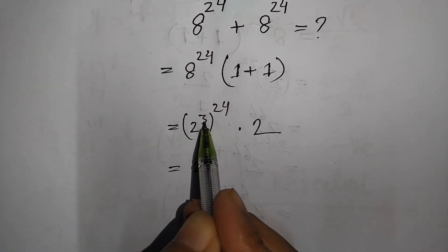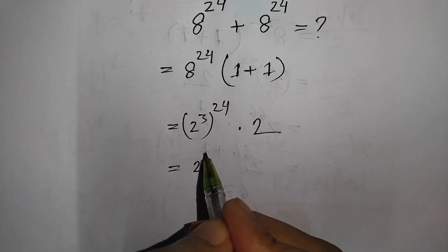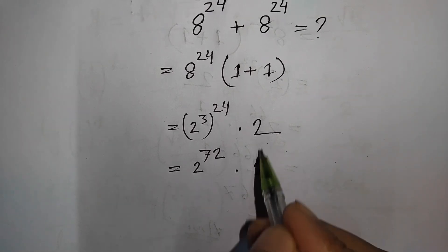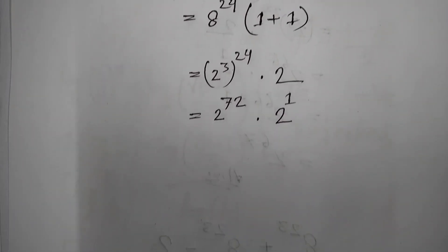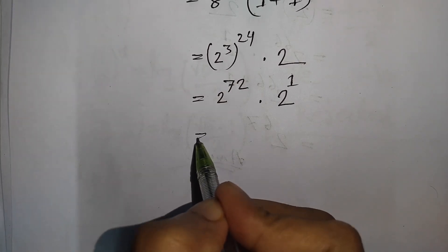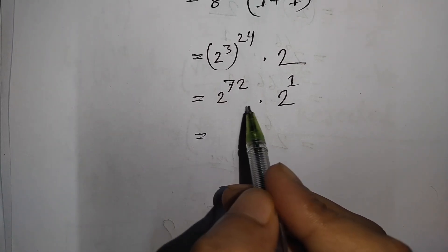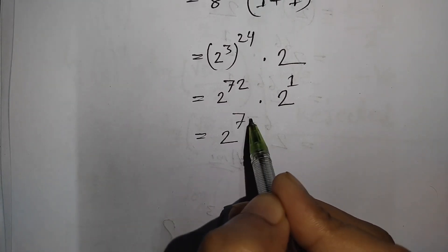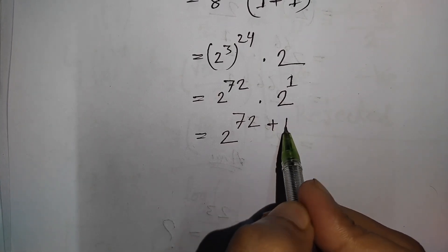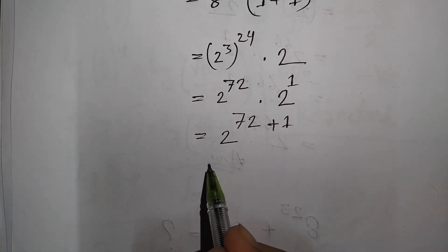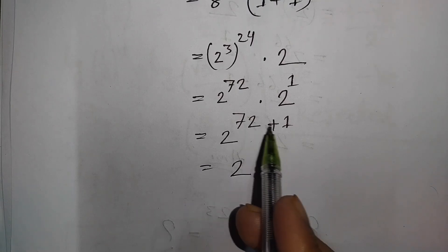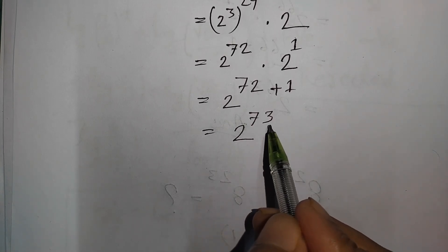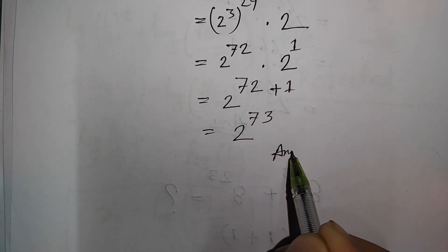We have 2^72 times 2^1. Since the bases are the same but different powers, we write 2^(72 + 1), which equals 2^73. So 2^73 is the correct answer.